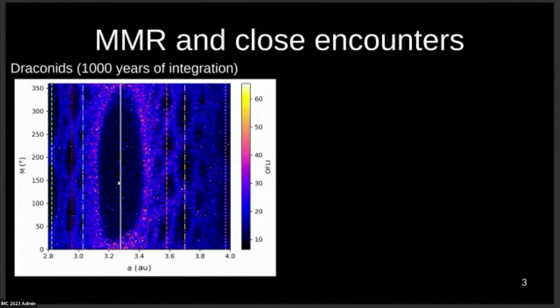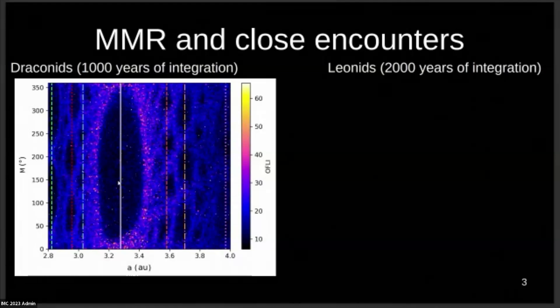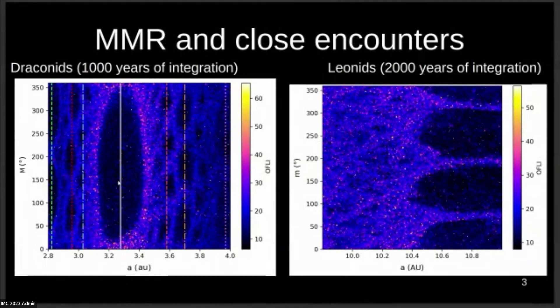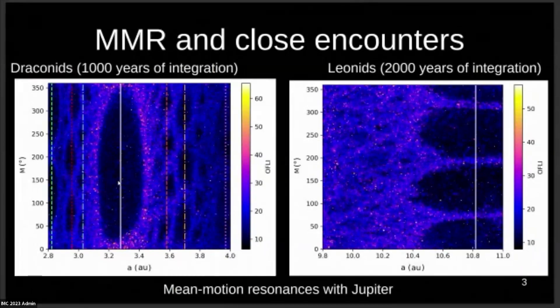For the Leonids, I did a very similar thing, but I integrated the particles for 2,000 years, and I also obtained a map with some very pretty lobes that are also correlated with mean motion resonances with Jupiter. So basically, we have mean motion resonances which make sure that the particles inside them stay much more stable than in any other place on my maps.